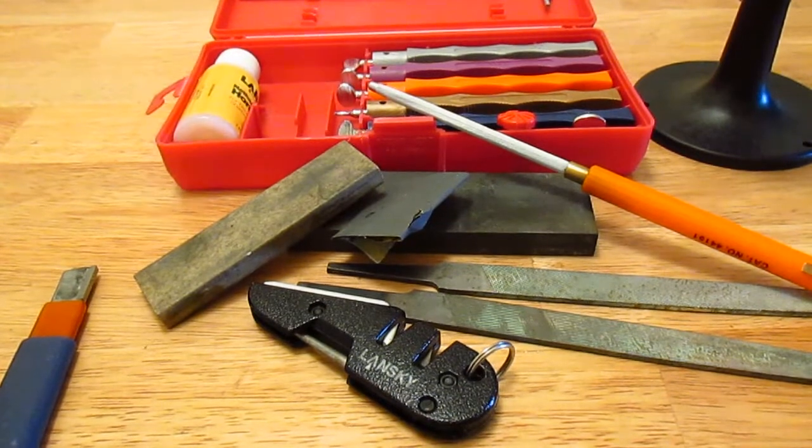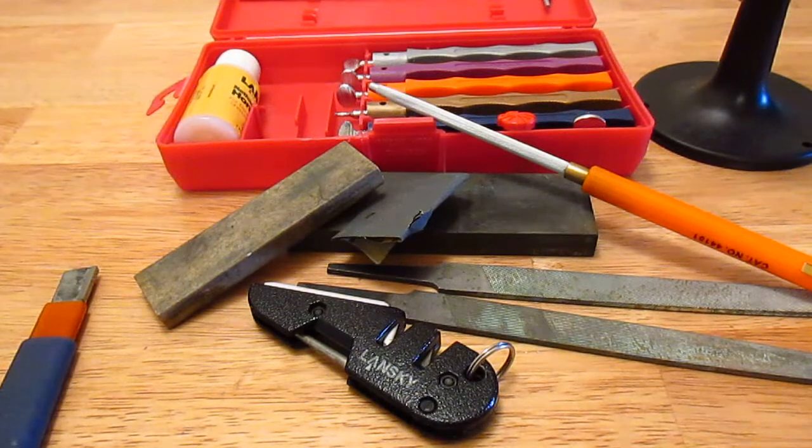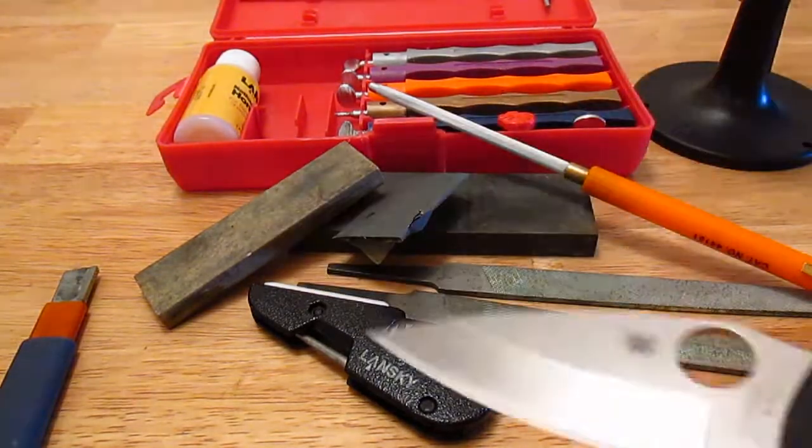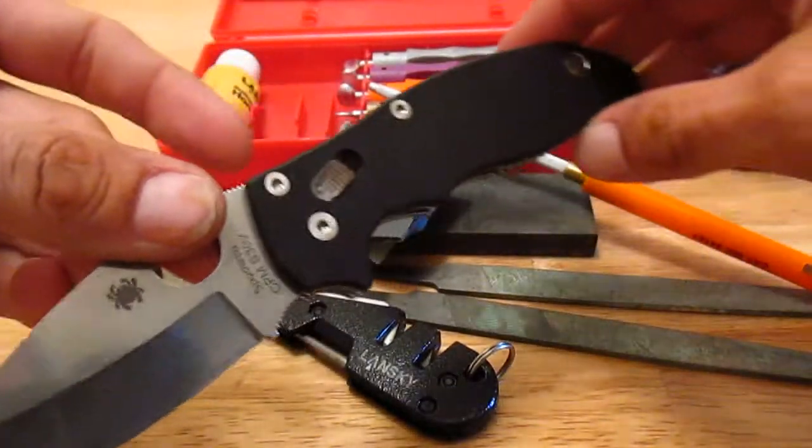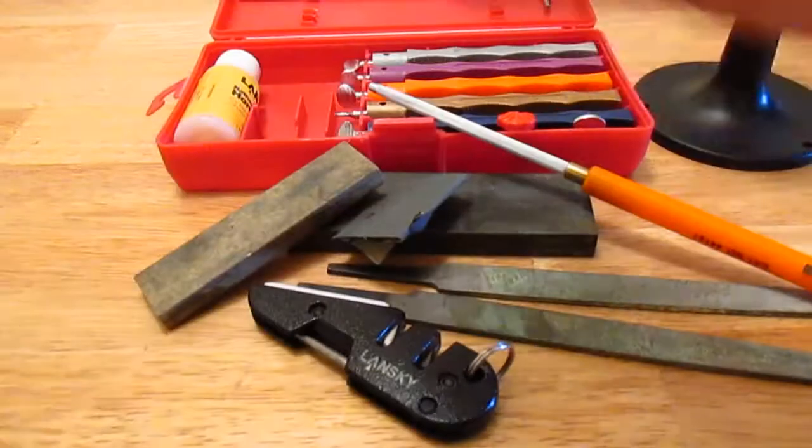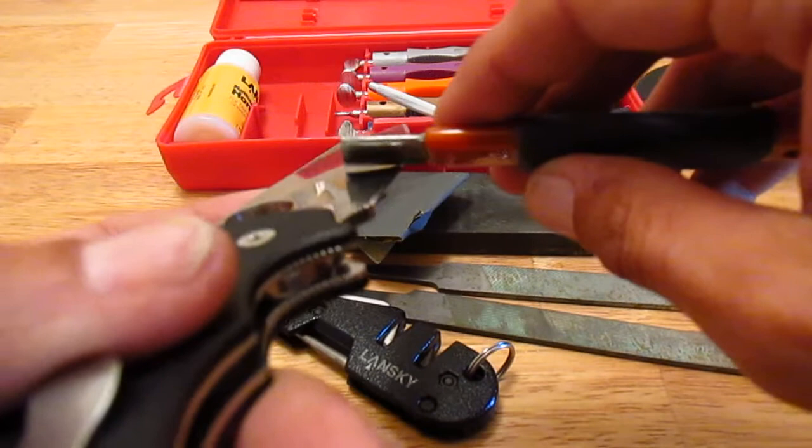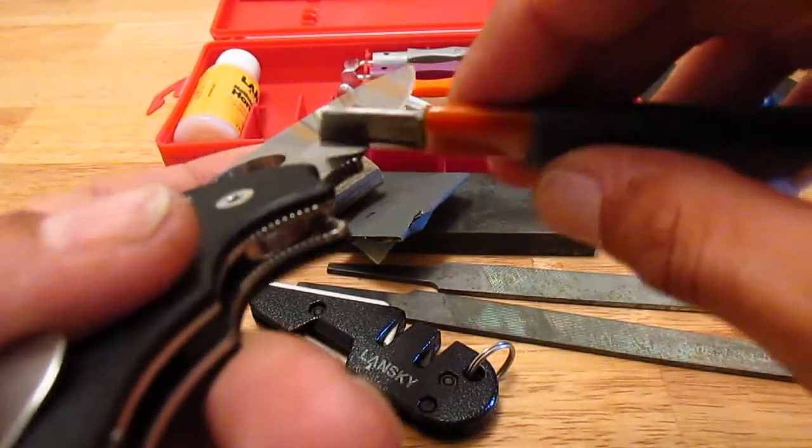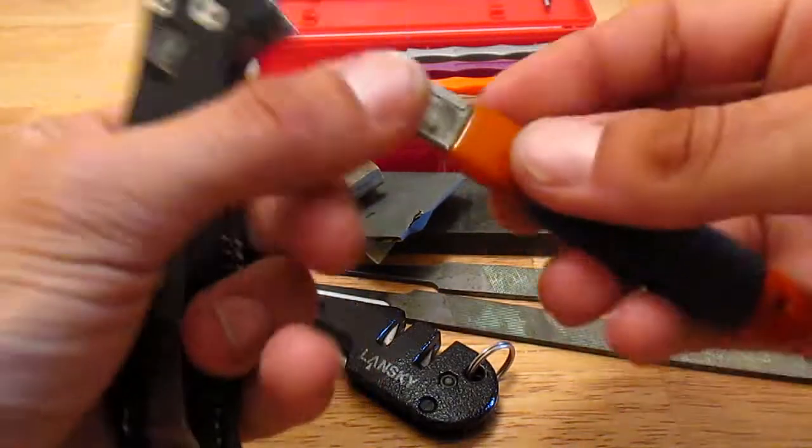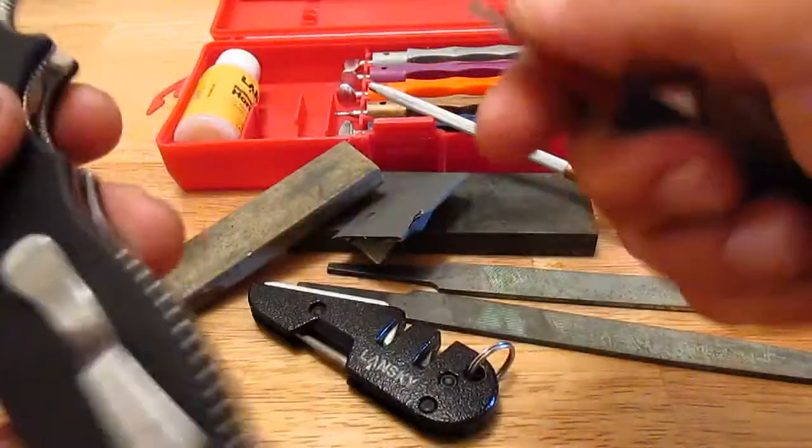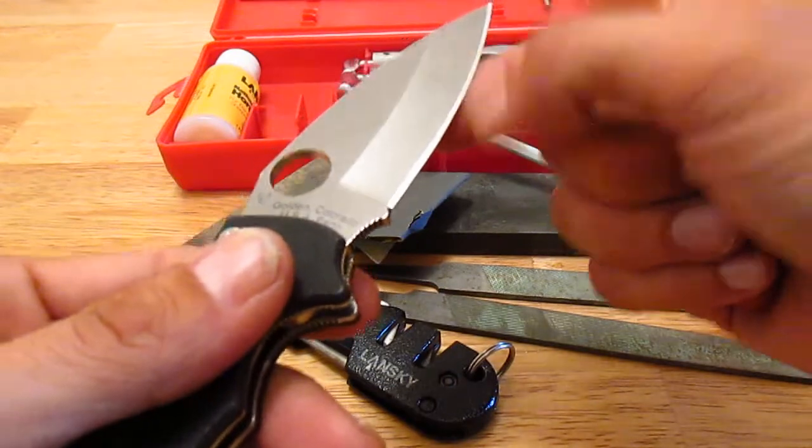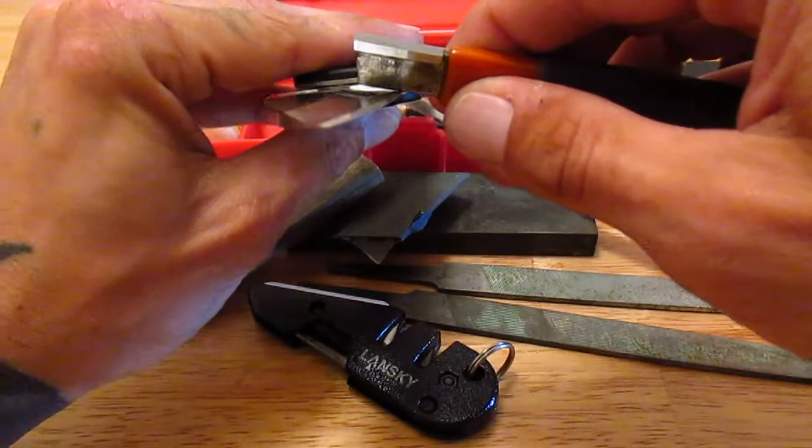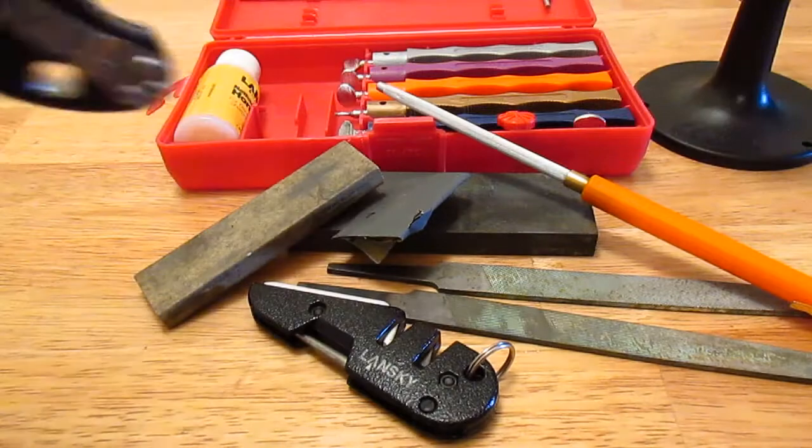I'll use my Spyderco Manix 2 as an example. When using this, you would go along the edge of the blade here and without any pressure just slide it along. Do that on each side about 10 times and it will bring it back to life. If your knife is already sharp but you just want to touch it up, you'd use the opposite side and just do the same thing. Works really well - I've had this for about five or six years.